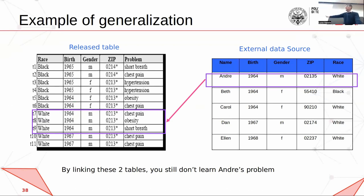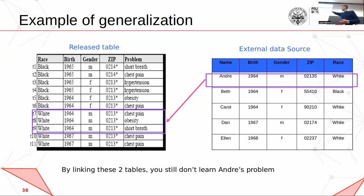So if you have external data — like a table on the right with a person's birth date, gender, zip code, and race — you can try to link it with the anonymized table, but then you don't know. First, you don't know if the person is in the data, and also you don't know if they have chest pain, obesity, or a shortness of breath problem.